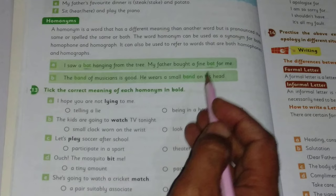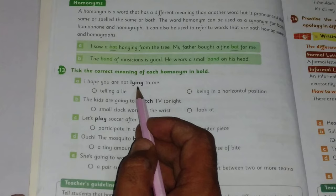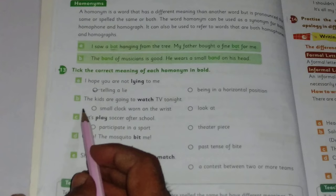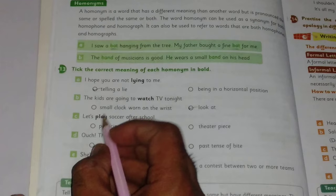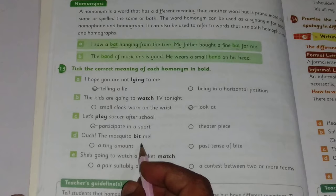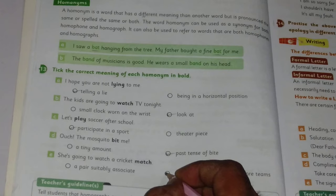Now here is the question: 'I hope you are not lying to me'—this line tells about telling a lie. Option A is right. 'The kids are going to watch TV'—here watch means look at. 'Let's play soccer after school'—participate in a sport. 'Ouch, the mosquito bit me'—this is the past tense of bite. 'She is going to watch a cricket match'—here match means a contest between two or more teams.